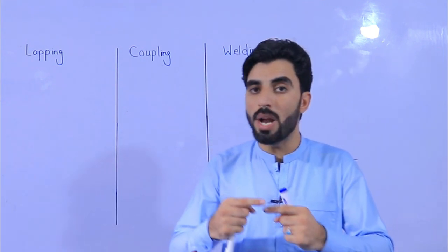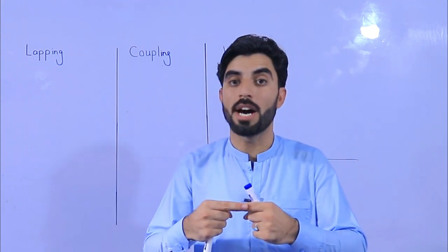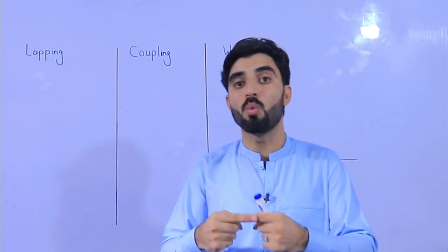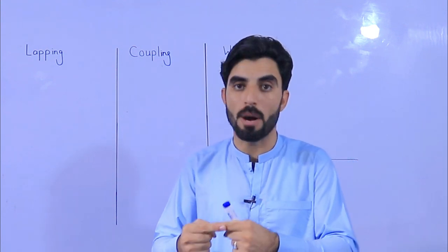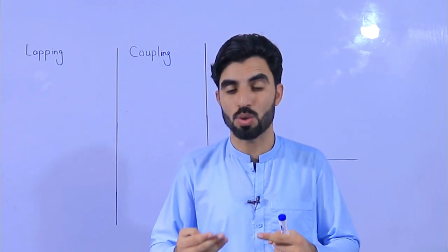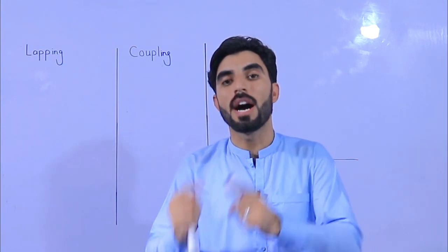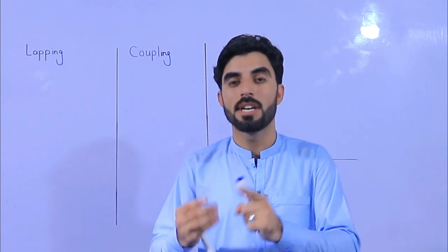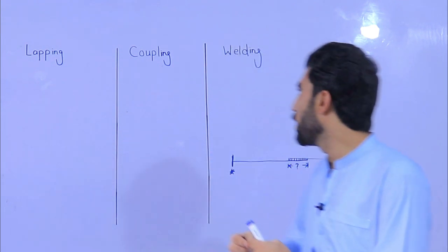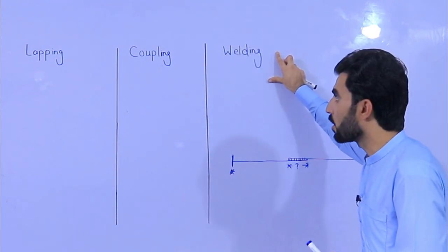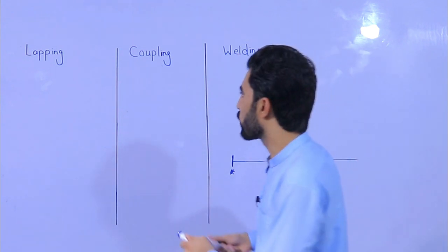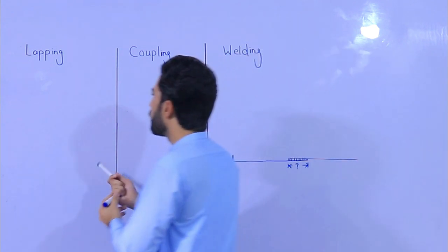The third method is welding. When we weld one steel bar to another for overlapping, the welding point cannot work properly — it cannot support the structural load, and at that point it can sometimes break. Therefore, welding is not the best method. So now, which one is the best? I will tell you.